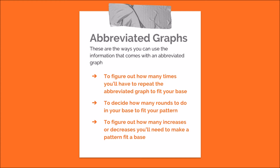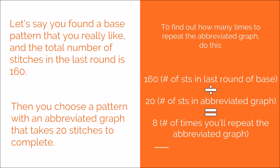Based on that information you can figure out these things: how many times you have to repeat the abbreviated graph to fit your base, how many rounds you should do in your base to fit your pattern, or how many increases or decreases you'll need to make a pattern fit your base. Here's an example of how you can use the information from an abbreviated graph to figure out how big your pattern should be for the sides — in other words, how many times you should repeat the abbreviated graph.